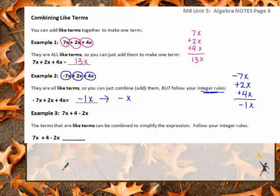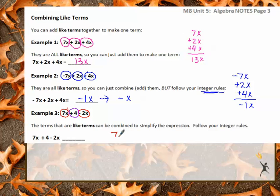For the last example, we have two terms with an X: 7X and negative 2X. But this 4 is a constant, so it's all by itself — its own separate color. There's a giveaway here for how many terms are in the answer: because I have two colors, I should have two terms. I'm going to rewrite this with 7X minus 2X first, because you always want to put your letters first and go left to right. Then I'll put plus 4 at the end, keeping my constants by themselves.